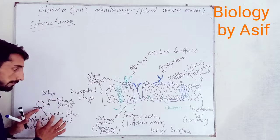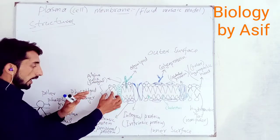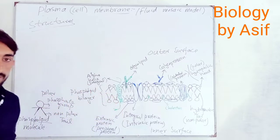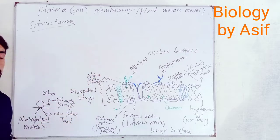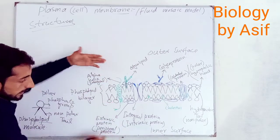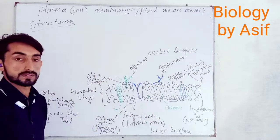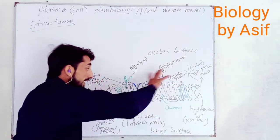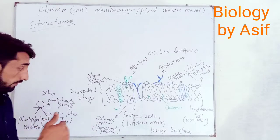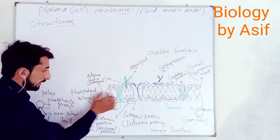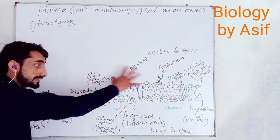These phospholipid molecules combine at their nonpolar tails with the polar heads facing outward, forming a phospholipid bilayer — one layer towards the inner surface and the other towards the outer surface. This is the fluid-mosaic model.